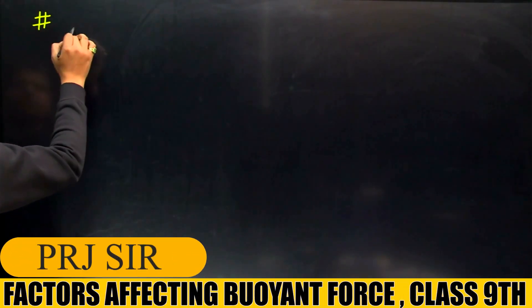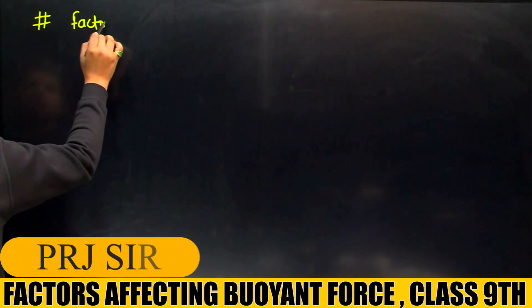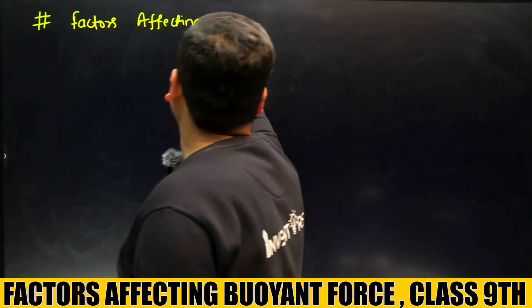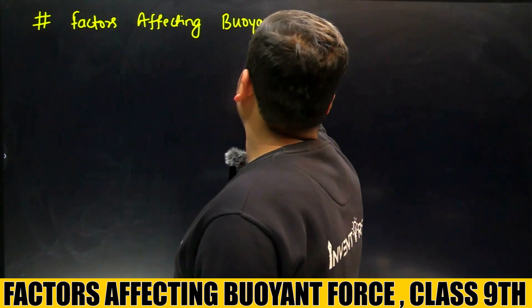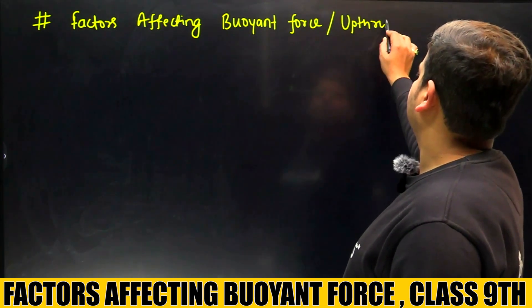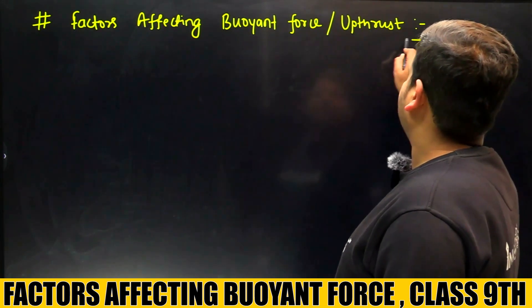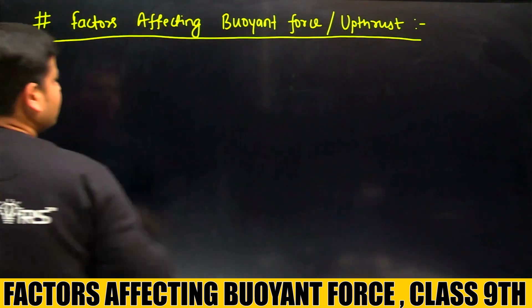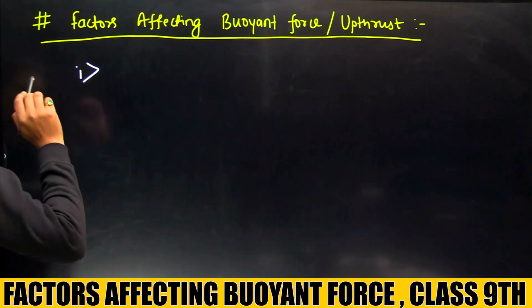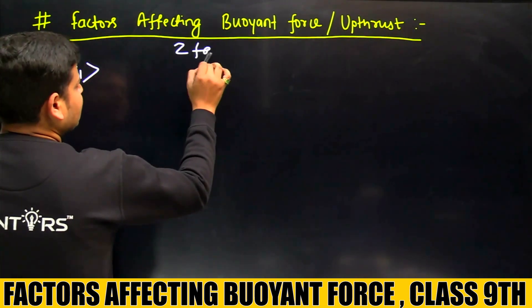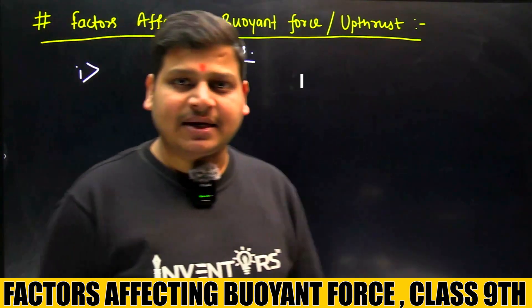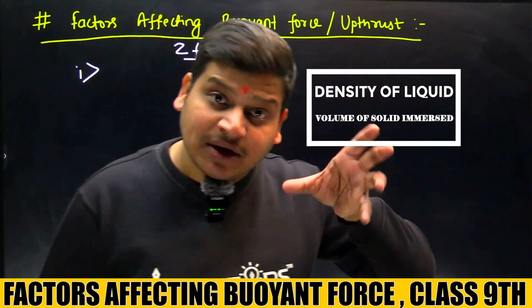Factors affecting buoyant force, factors affecting upthrust. कौन-कौन-सा factor है जो कि इसको affect कर रहा है? दो factor हैं जिन पर यह upthrust depend कर रहा है। पहला है density और दूसरा है volume of solid immersed.